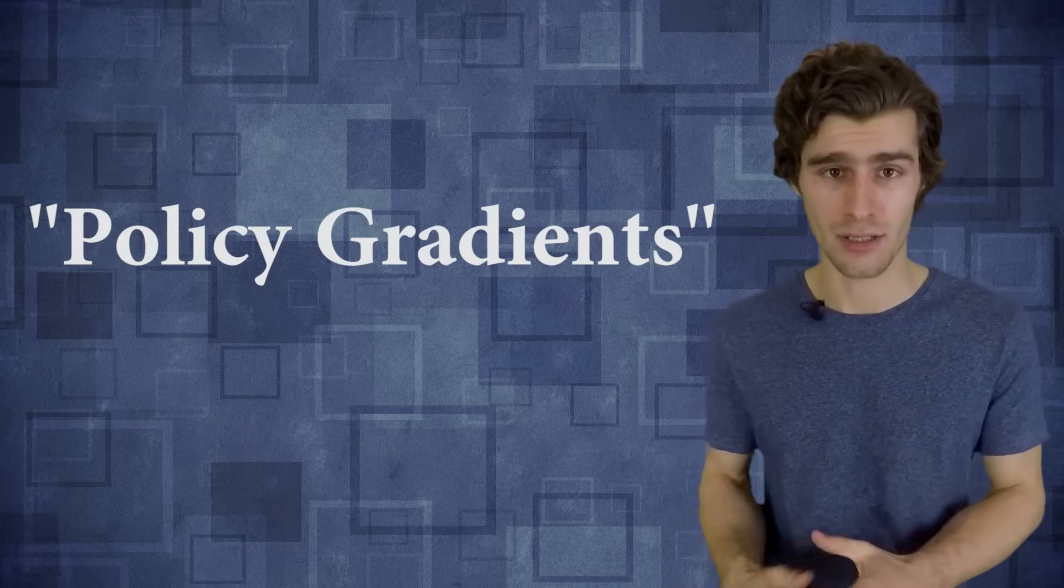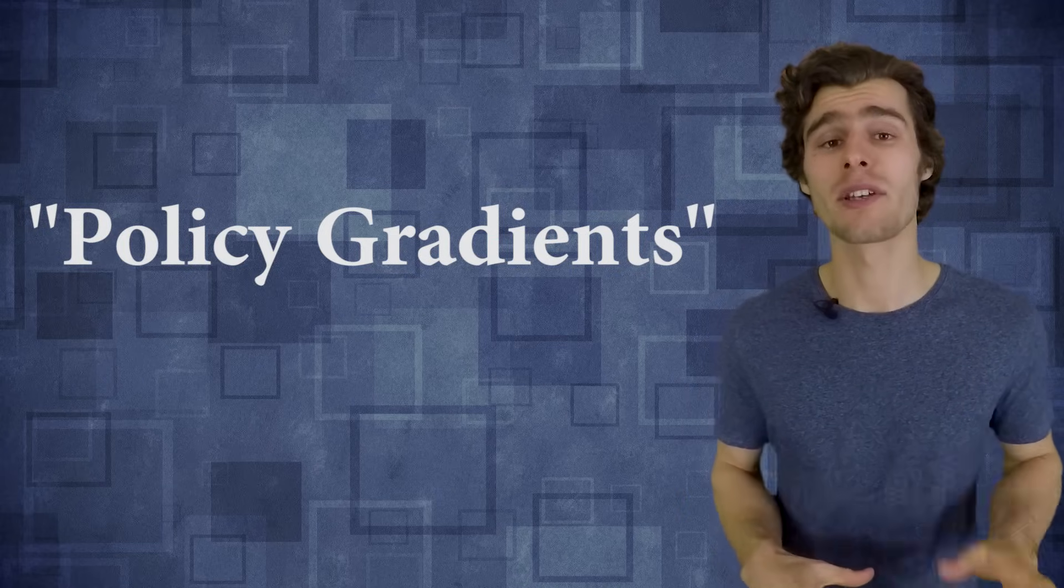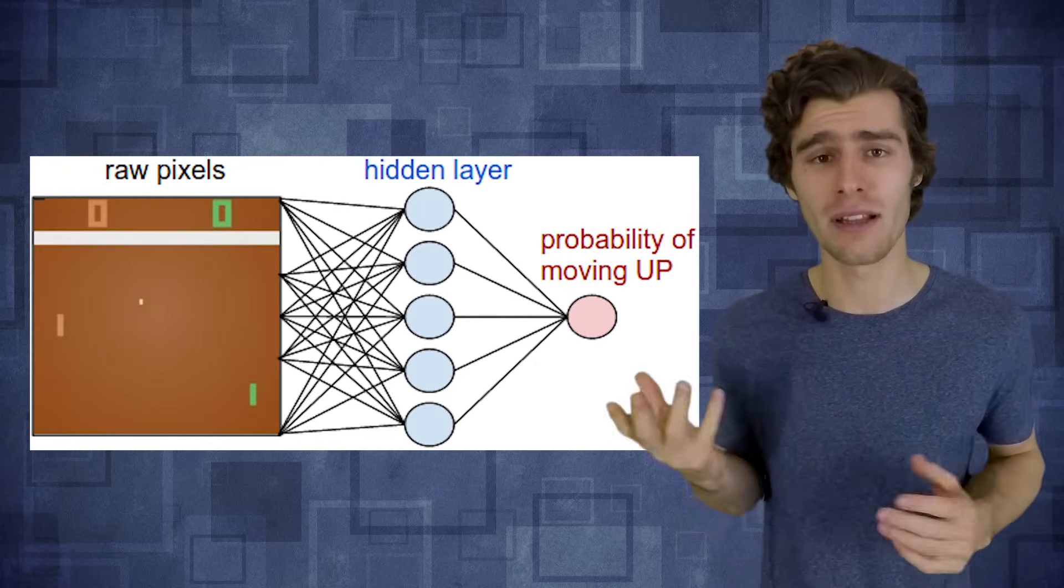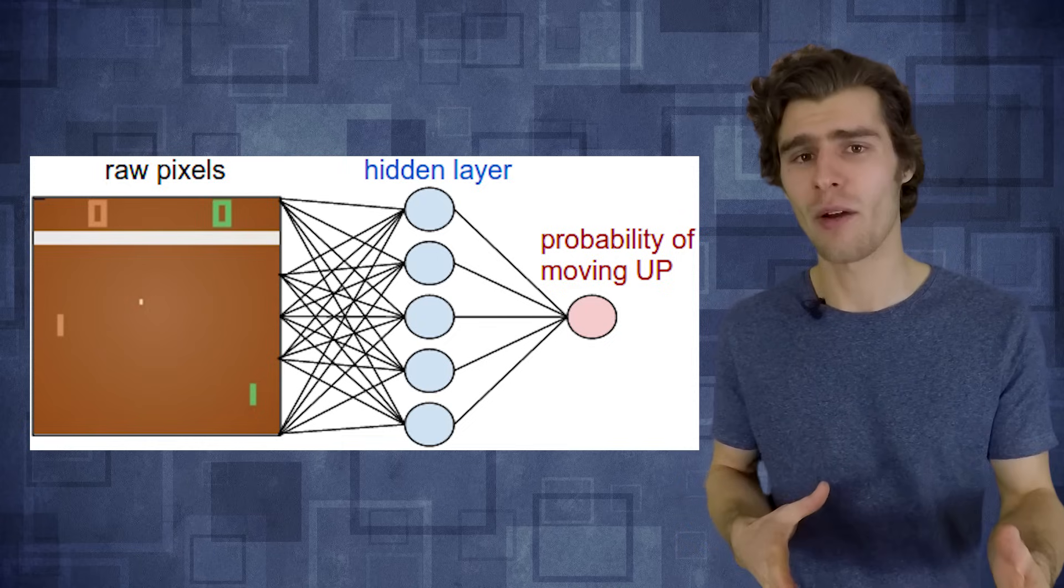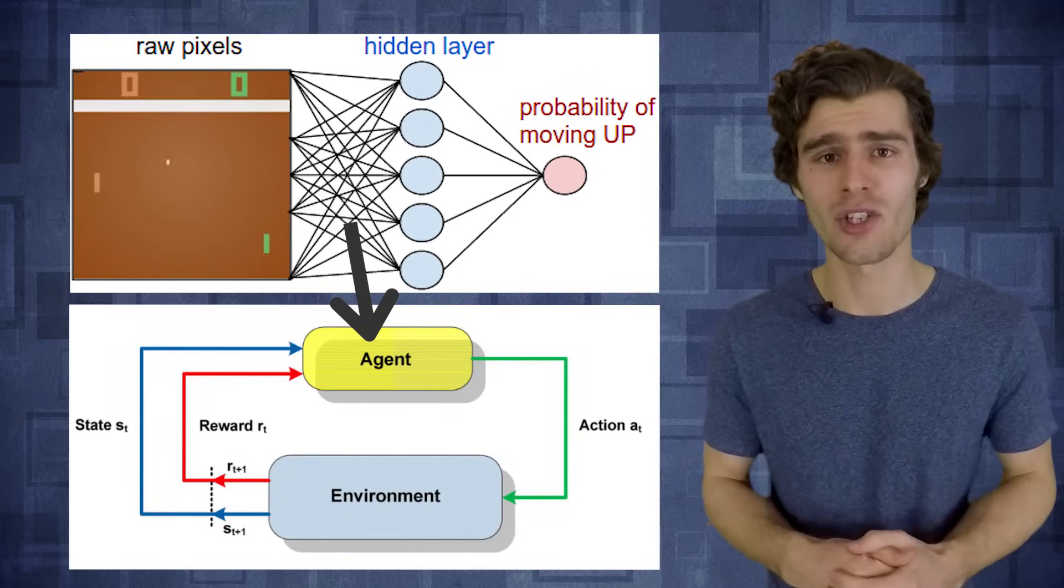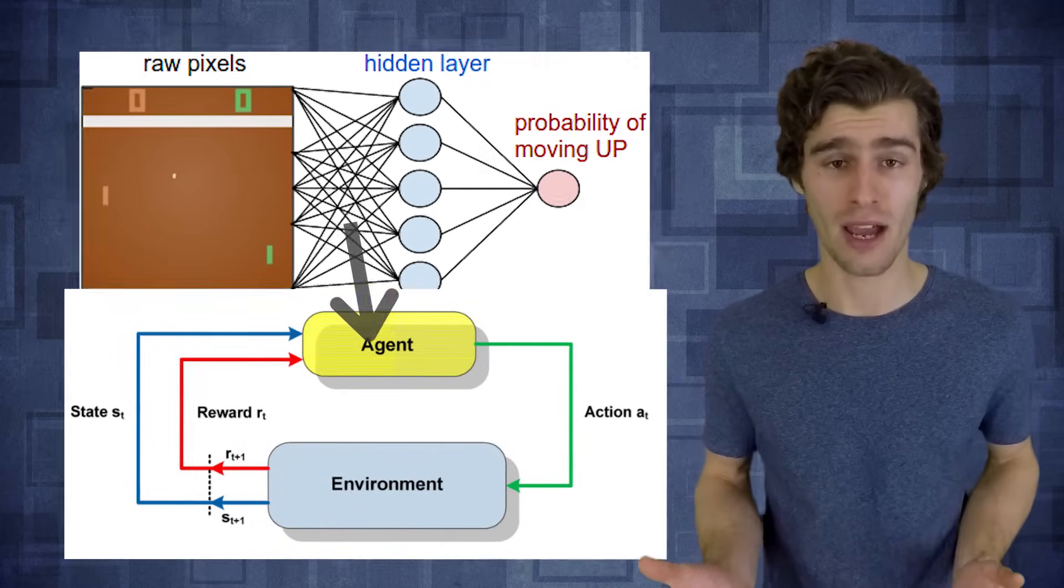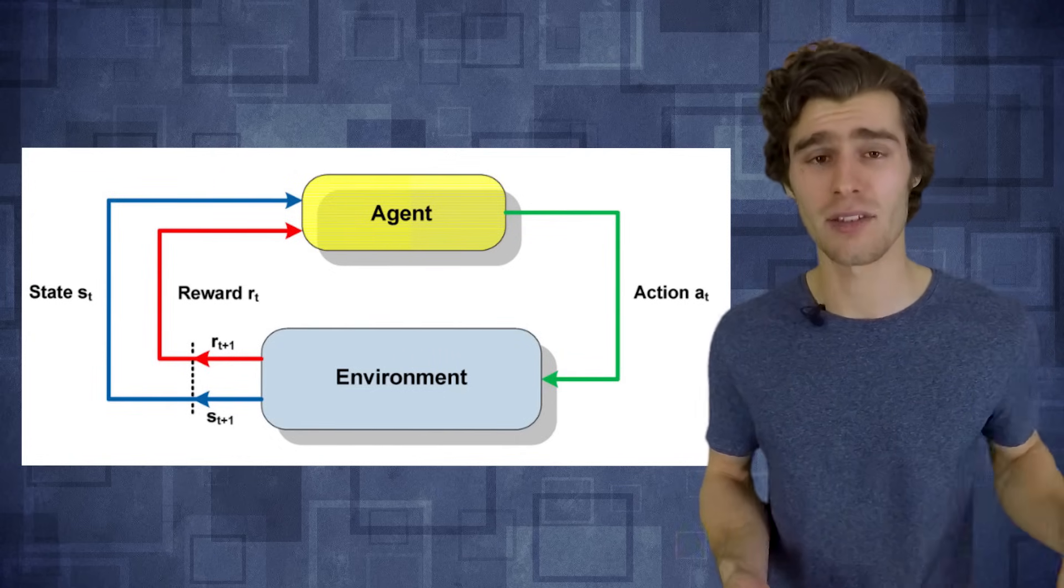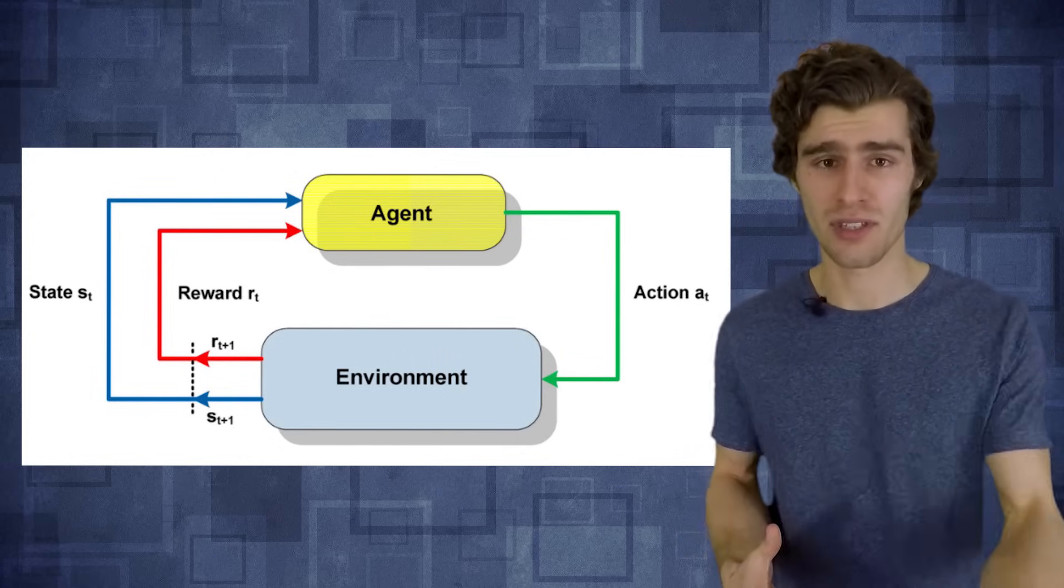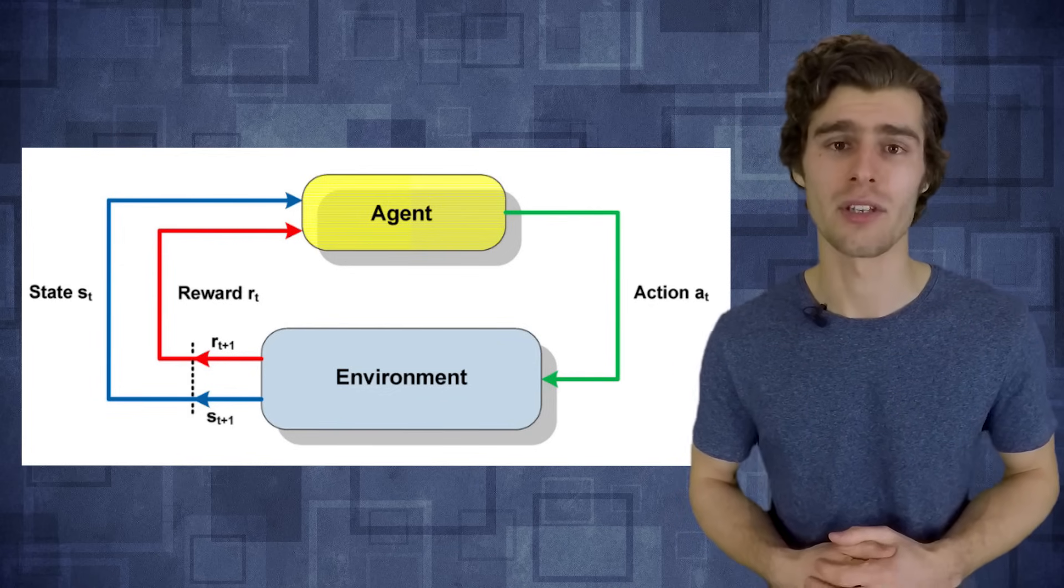Now, one of the simplest ways to train a policy network is a method called policy gradients. So the approach in policy gradients is that you start out with a completely random network. You feed that network a frame from the game engine, it produces a random output action, either up or down, you send that action back to the game engine, and the game engine produces the next frame. And this is how the loop continues.